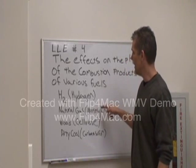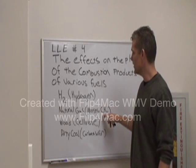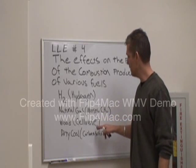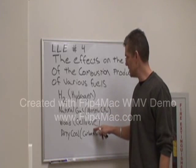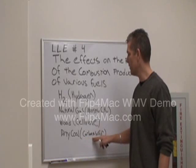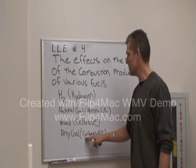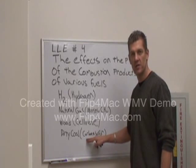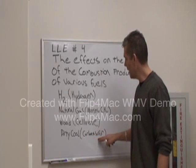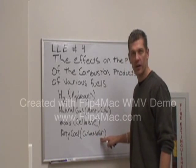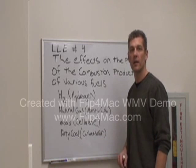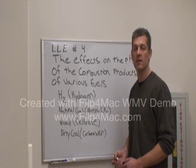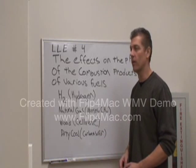Natural gas is mostly methane, wood is a cellulose, and for dirty coal we actually have a mixture of carbon and sulfur to mimic the combustion products of dirty coal.